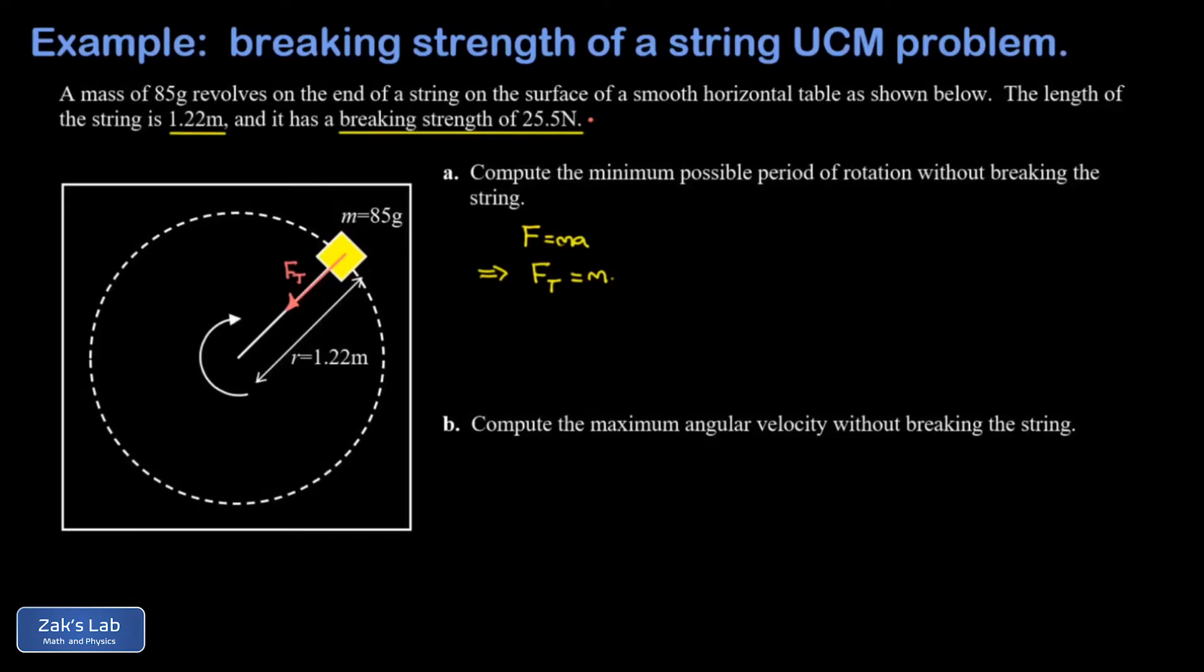Now we could write that as v squared over r, but then we'd have some more work to do to get that in terms of the period. It's better to just remember the formula for centripetal acceleration in terms of period and that's 4π² r over T². So ultimately what we're going to do is plug in a tension of 25.5 Newtons and then just figure out what period corresponds to that, and that will be our smallest period.